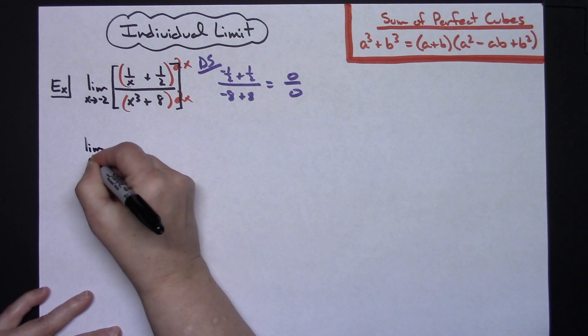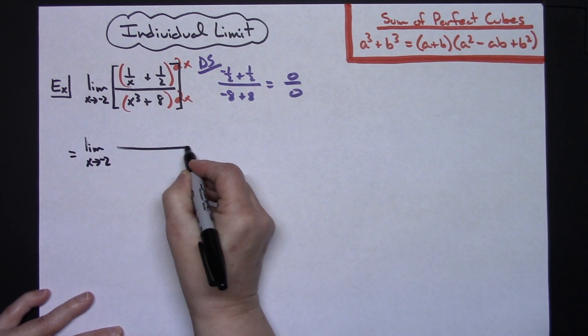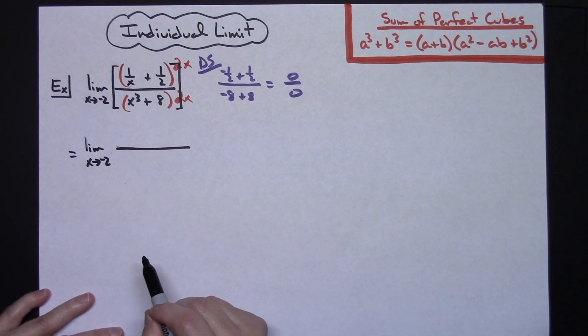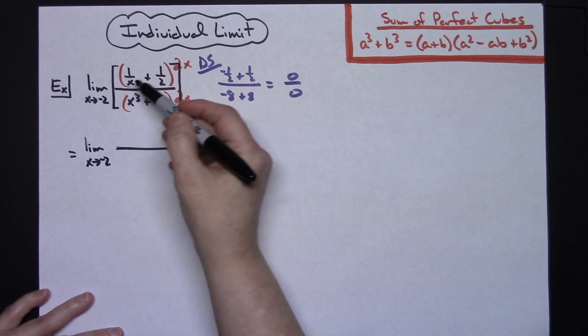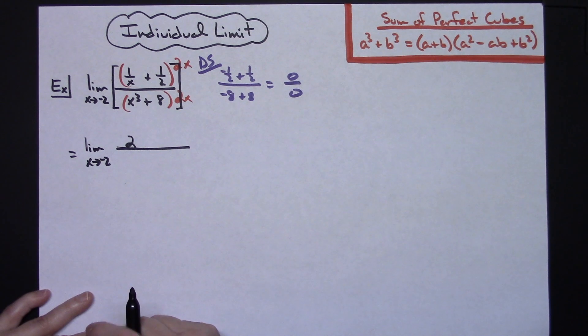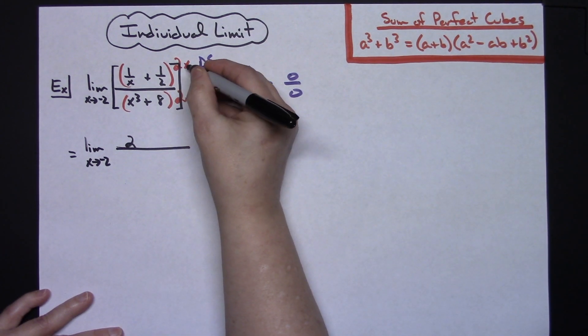I'm going to have the limit as x approaches negative 2. In my numerator now, the whole point of multiplying through by that least common denominator is to get rid of those fractions that are in the numerator. If I take 2x times the 1 over x, the x's are going to cross out and leave me with the 2.